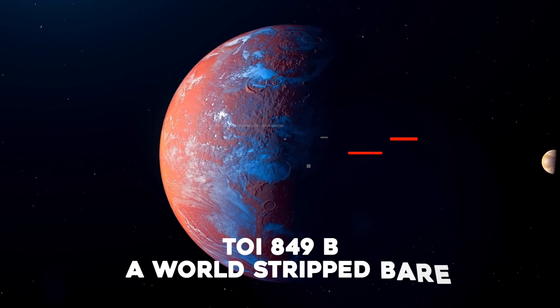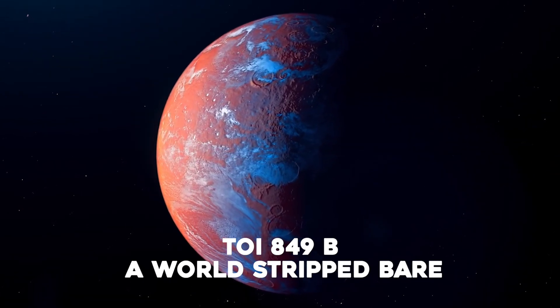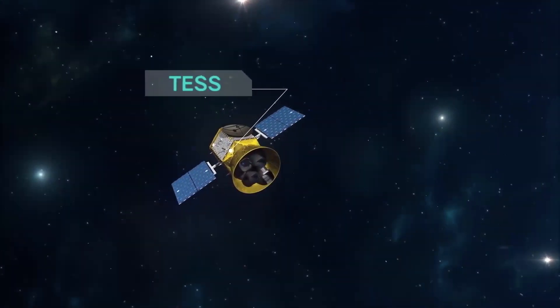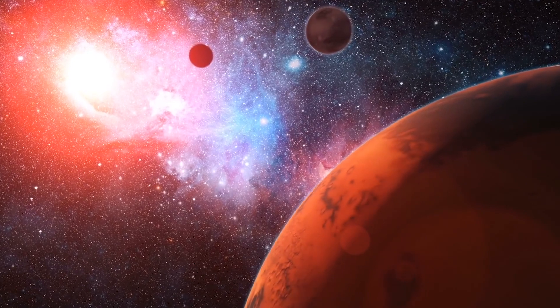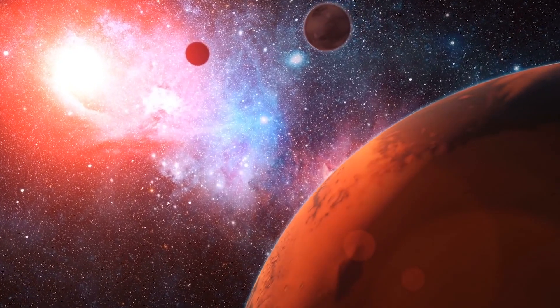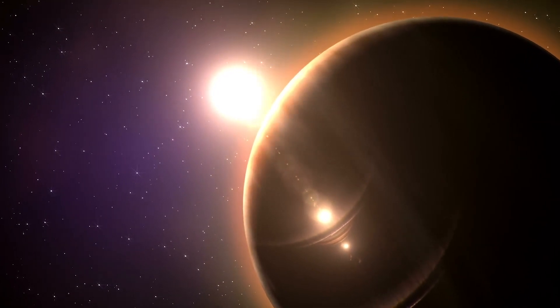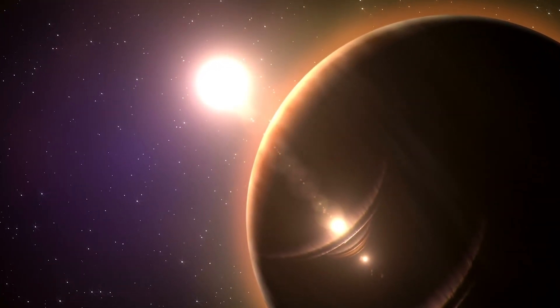TOI 849b – A World Stripped Bare. Discovered in 2020 by NASA's Transiting Exoplanet Survey Satellite, TESS, it's no fun at all on TOI 849b. This exoplanet orbits so tightly to its star that a year passes in 18 hours.